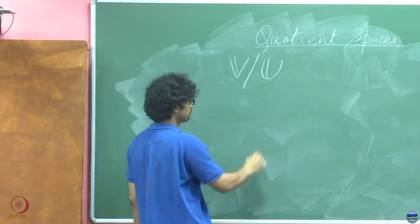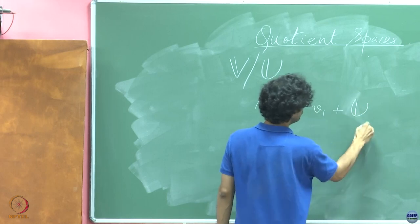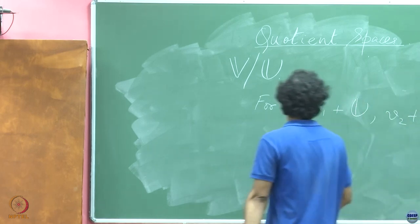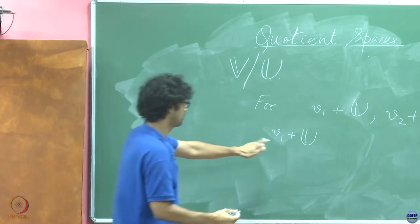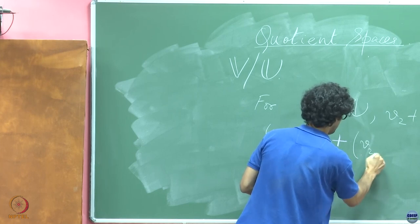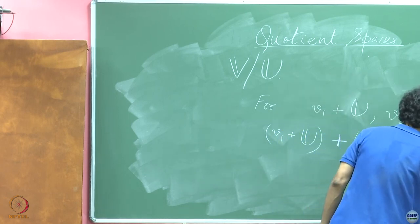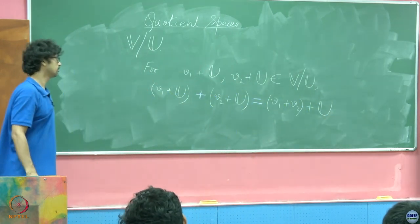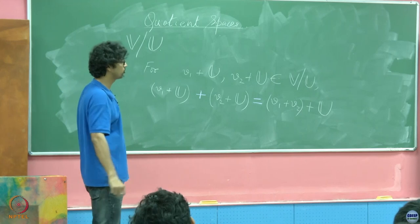With that in mind, we will define the addition in this manner for V1 plus U, V2 plus U belonging to V quotiented by U. We define this addition V1 plus U. I will use a different color because this is not this addition but actually the addition we are defining. That is the definition and the moment we have defined this, we have to question ourselves if this even makes sense.